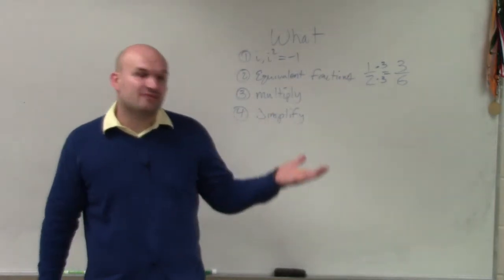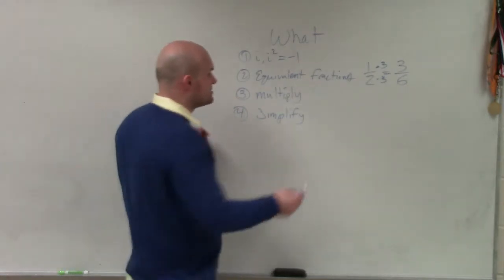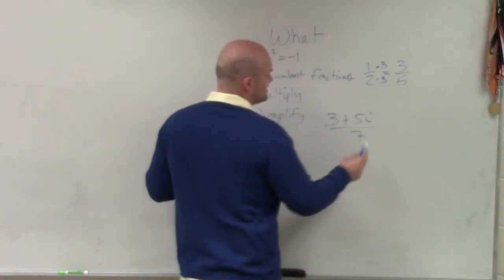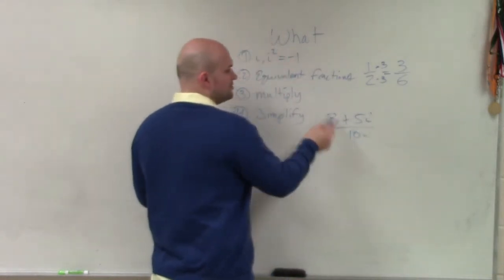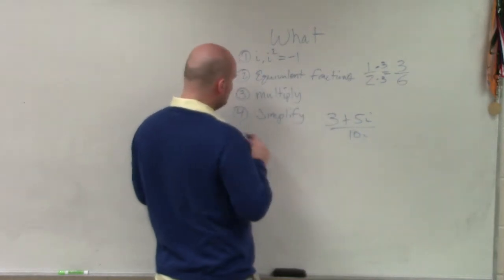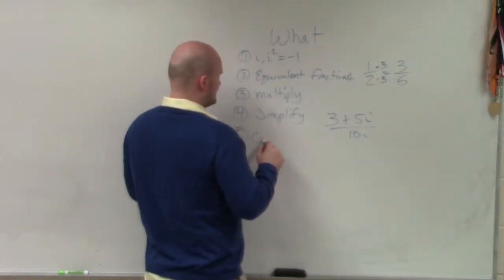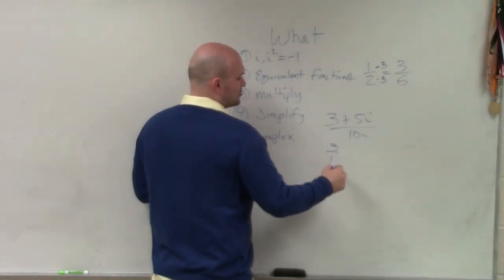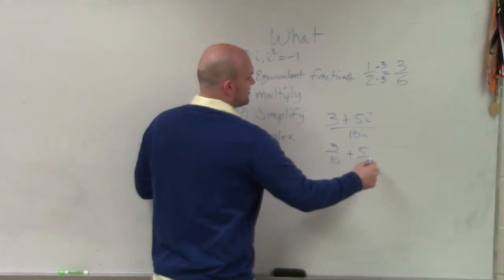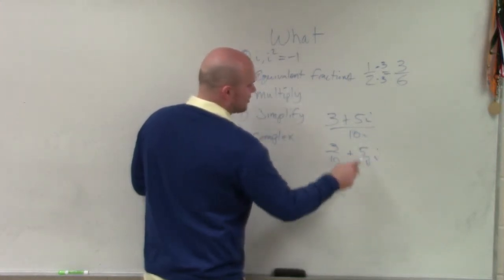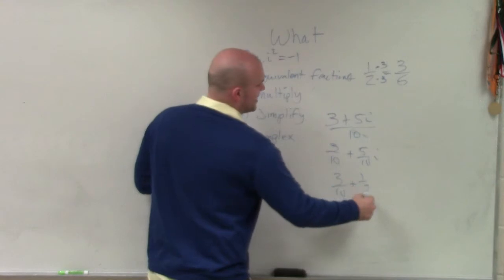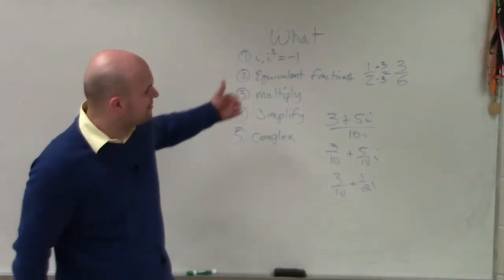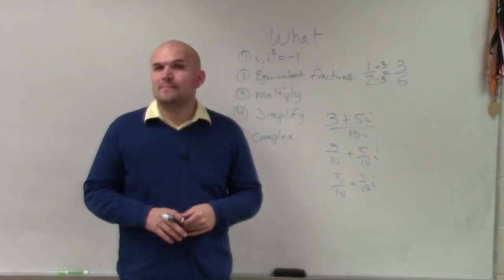The last thing is simplifying — not only by combining terms, but also if you have a binomial like 3 plus 5i divided by 10, making sure you know how to rewrite this as a complex number, which would be 3 tenths plus 5 tenths i. And 5 tenths we can rewrite as 1 half i. Just a couple of things to make sure everything is in standard form. Thanks.